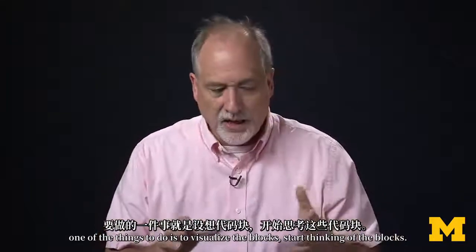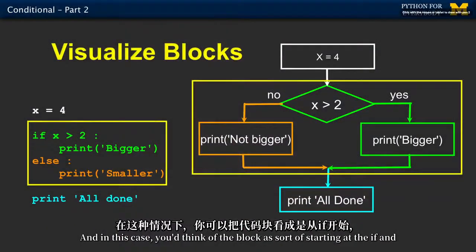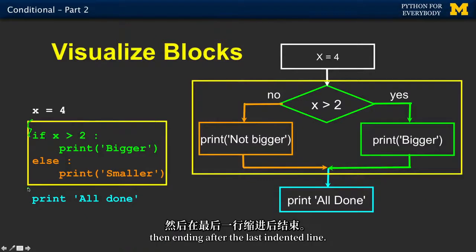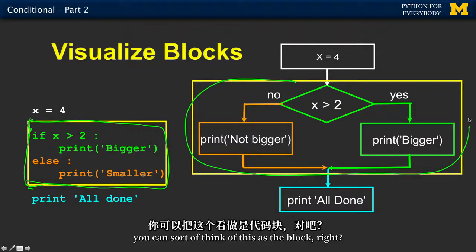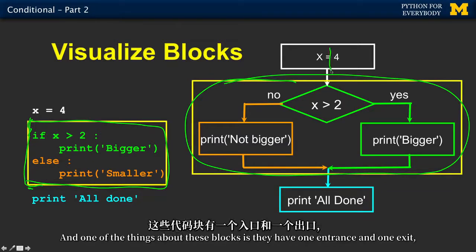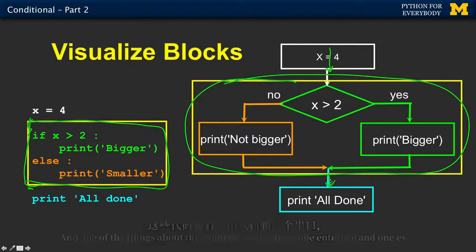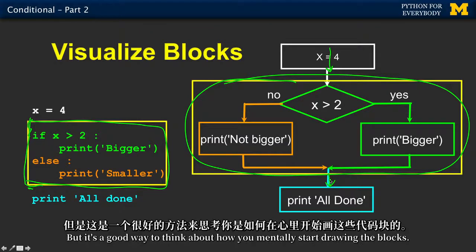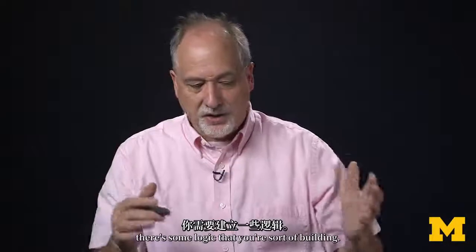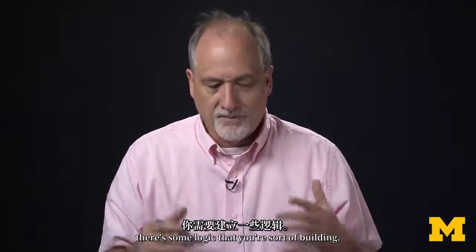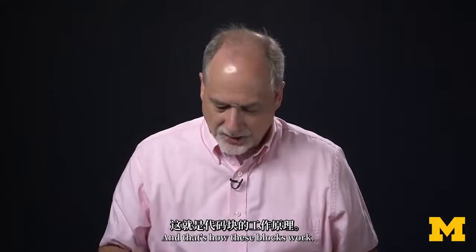Start thinking of the blocks. In this case, you think of the block as sort of starting at the if and then ending after the last indented line. The if and the else are a piece of one thing. One of the things about these blocks is they have one entrance and one exit. That's how these blocks work.